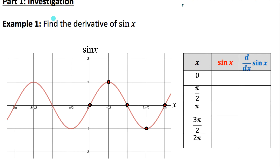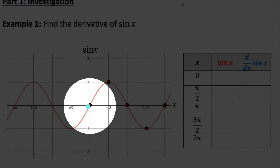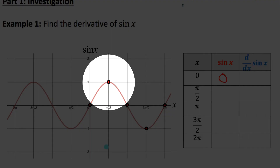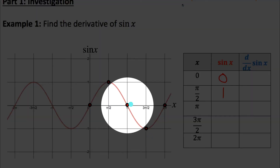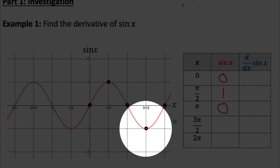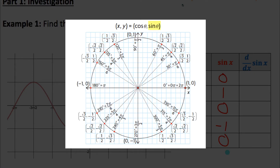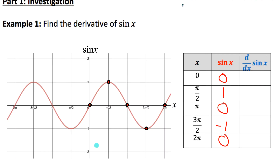Instead of me just telling you what the derivative is, we're going to come up with a table of what we think the slope of this function is at a bunch of points. I have five points labeled on sine x — points that make up one complete cycle. Let's record the y values: sine of zero is zero, sine of pi over two is one, sine of pi is zero, sine of three pi over two is negative one, and sine of two pi is zero. We could get these from the unit circle or directly from the graph.